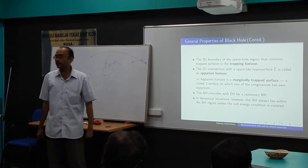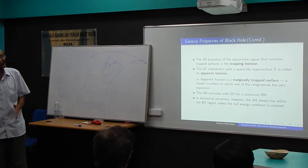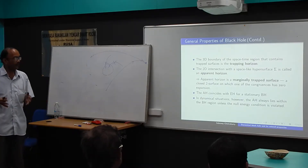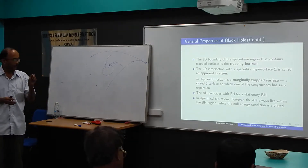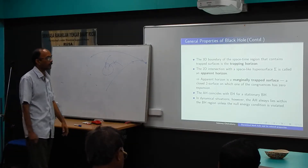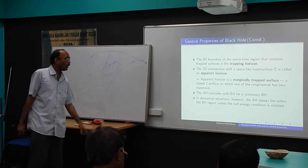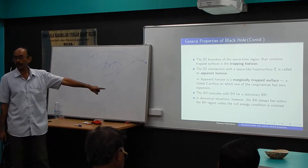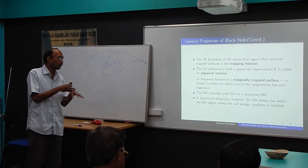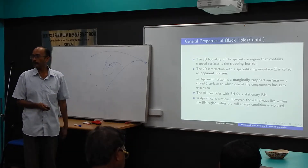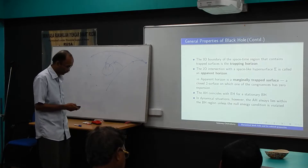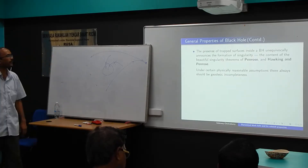But in the dynamical situation that I shall talk about, where the spacetime metric has time-dependent metric elements, there the apparent horizon will always be distinguished from the event horizon. The apparent horizon is always within the event horizon — it will always be inside the black hole, subject to certain energy conditions.